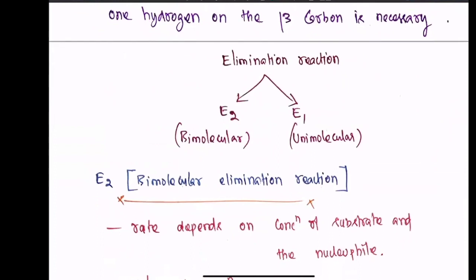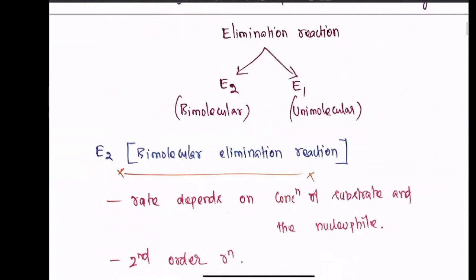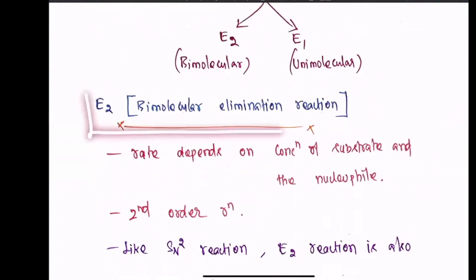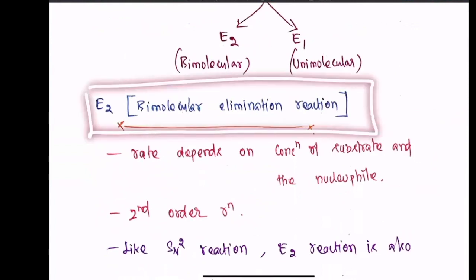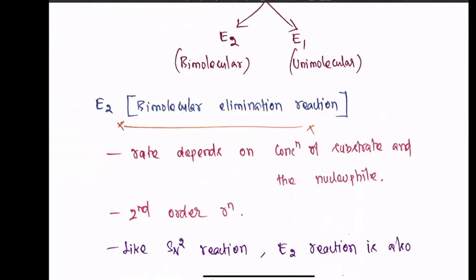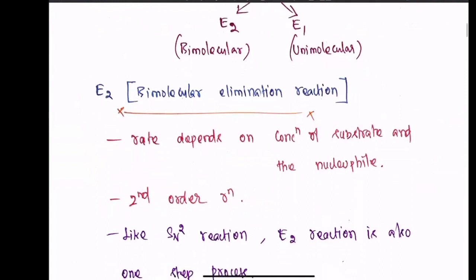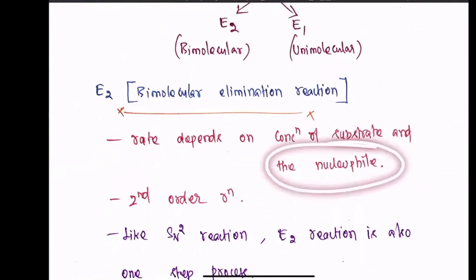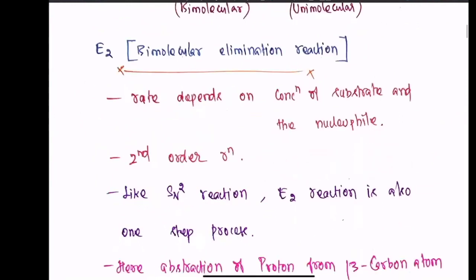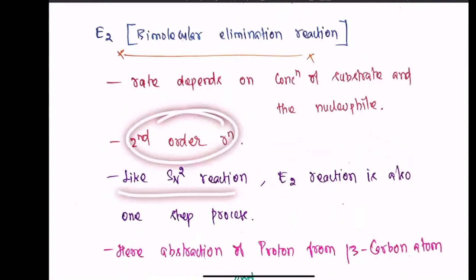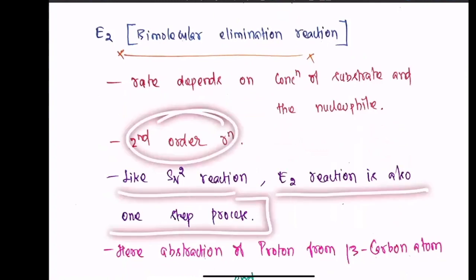Elimination reactions are classified as E1 and E2. E1 is unimolecular and E2 is bimolecular. In E2, the rate depends upon both the substrate and the nucleophile — that is, the concentration of the substrate and the base. This is a second-order reaction. Like SN2, E2 is also a one-step process.